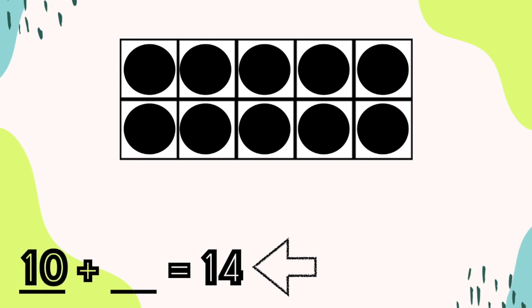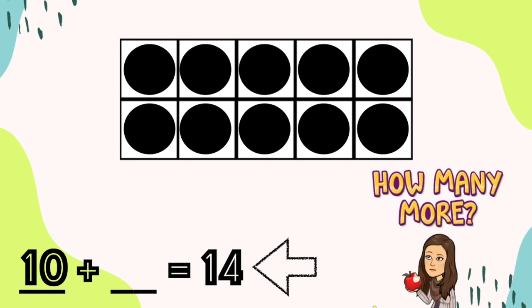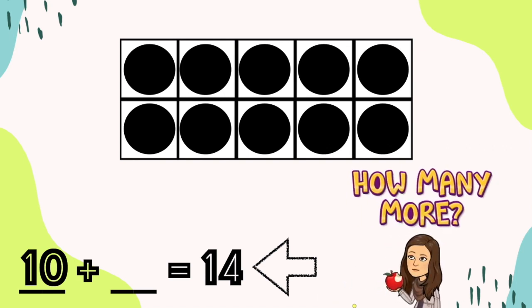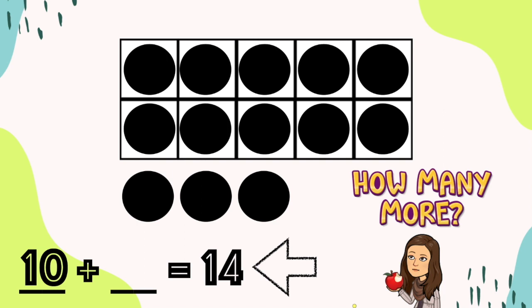Now, the question we need to figure out is how many more counters to get to 14? To figure this out, I'm going to start at 10 and count on by adding one counter at a time until I get to 14, like this: 11, 12, 13, 14.